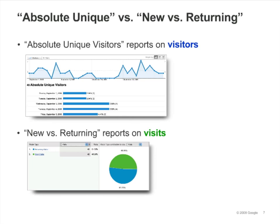A high number of new visits suggests that you are successful at driving traffic to your site, while a high number of return visits suggests that the site content is engaging enough for visitors to come back. You can look at the recency report to see how recently visitors have visited, and the loyalty report to see how frequently they return. Both the recency and loyalty reports are under visitor loyalty in the visitors section.